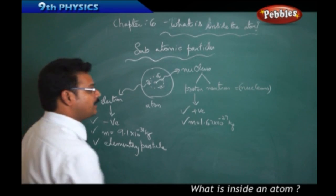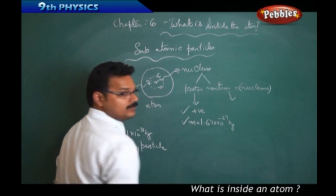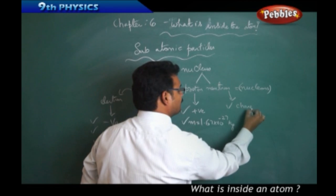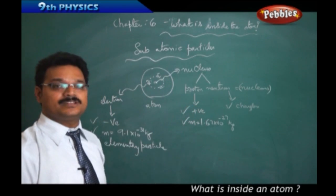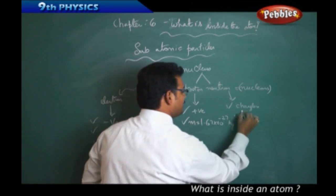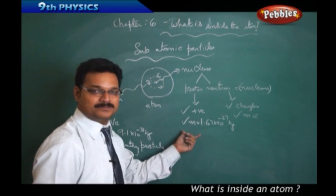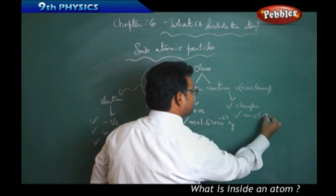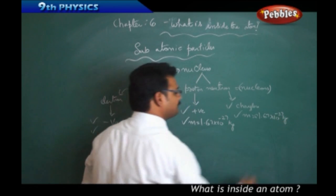Coming to the neutron: the neutron is chargeless — it does not have any charge at all. Its mass is approximately equal to the proton's mass, which is 1.67 × 10⁻²⁷ kg.